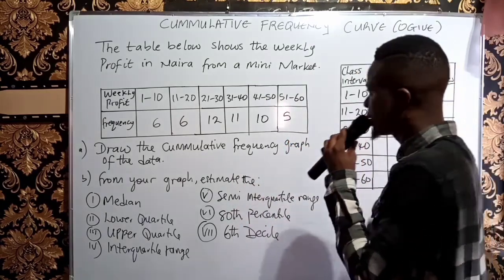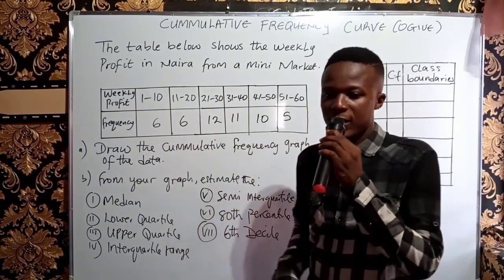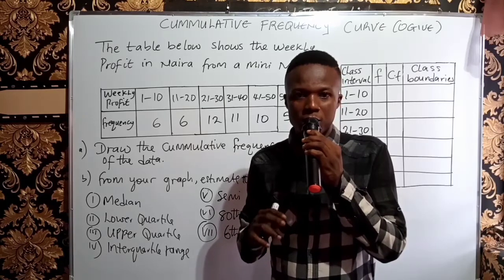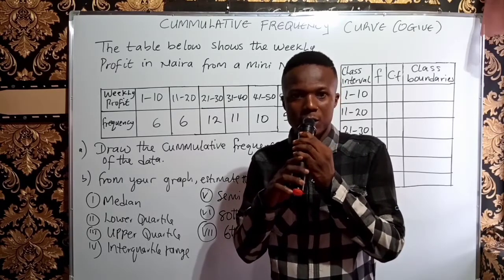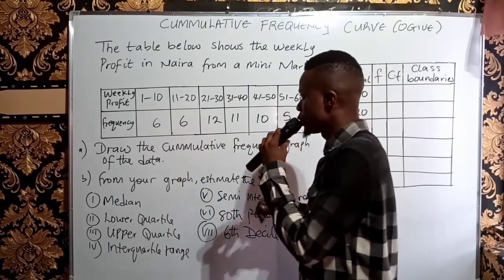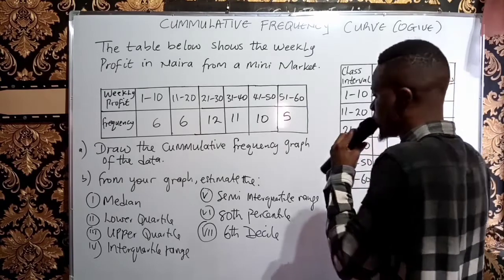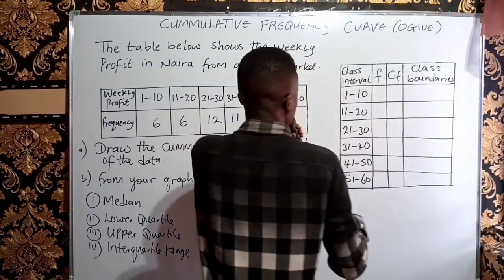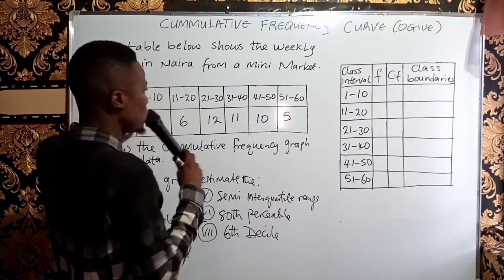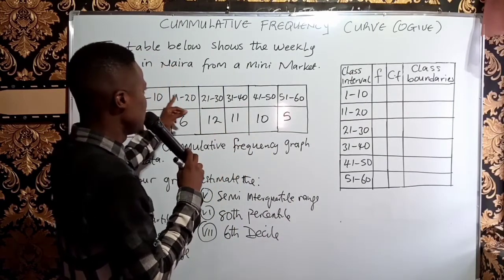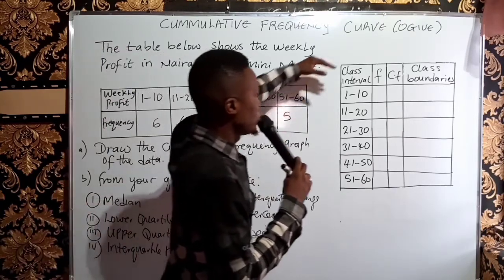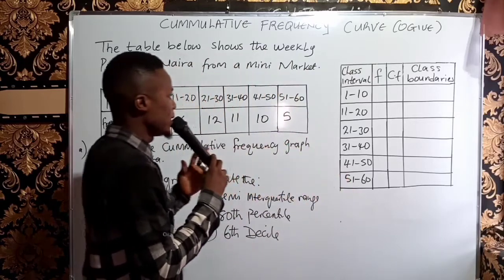The first thing to do in drawing the Ogive is to first and foremost prepare a cumulative frequency table, because it will be from that table that you will be able to construct the Ogive. To draw the cumulative frequency table, you make a table just like I have done. You can see where I have the class intervals — the weekly profit of 1 to 10, 11 to 20, 21 to 30, etc.